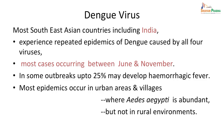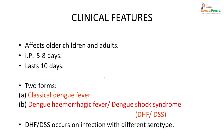Dengue virus is mostly seen in Southeast Asian countries including India. We have been experiencing repeated epidemics of dengue caused by all four viruses. Most cases occur between June and November. In some outbreaks, up to 25 percent may develop hemorrhagic fever. Most epidemics occur in urban areas and villages where Aedes aegypti is abundant, but not in rural environments. Clinically, it affects older children and adults. Incubation period can be 5 to 8 days, lasting up to 10 days. Two forms of dengue fever are seen: classical dengue fever and dengue hemorrhagic fever or dengue shock syndrome.